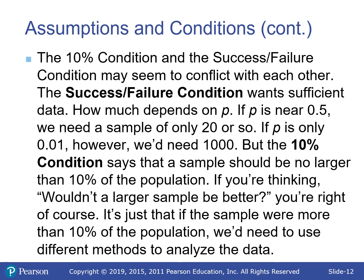The 10% and success-failure conditions can seem in conflict. If your proportion is about 0.5, you only need about 20. But the further from 0.5, the bigger the sample you need. Generally, the population is way bigger than 10 times the sample size — especially for things like rolling dice, which have an infinite population — so that 10% condition is rarely a problem.